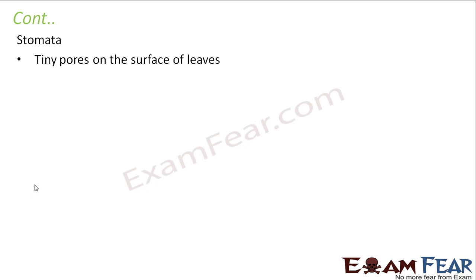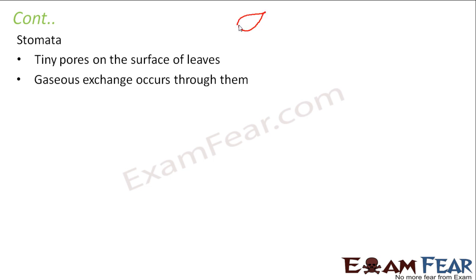So what are stomata? These are the tiny pores present on the surface of leaves. Chlorophyll is present inside the chloroplast in the cross-section of the leaf, but stomata are present on the surface of the leaf itself — extremely tiny pores which are not visible with the naked eye. Gaseous exchange occurs through them. This is how the plant absorbs carbon dioxide, since carbon dioxide is present in the atmosphere and the plants take it in through these small pores on the leaves.